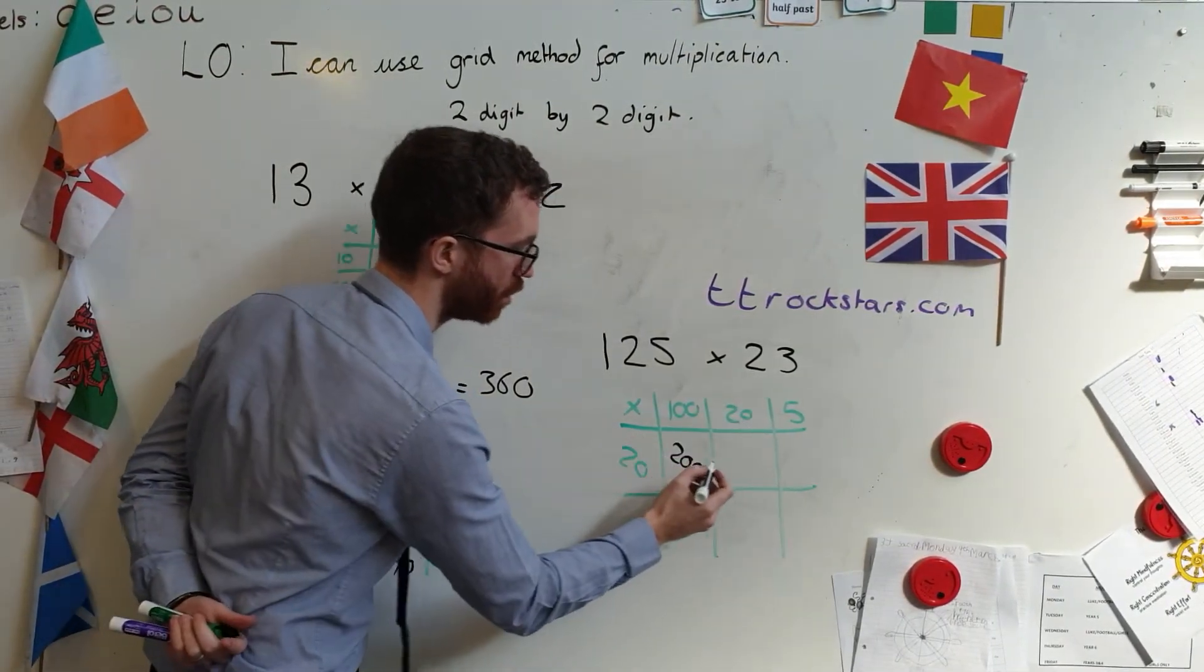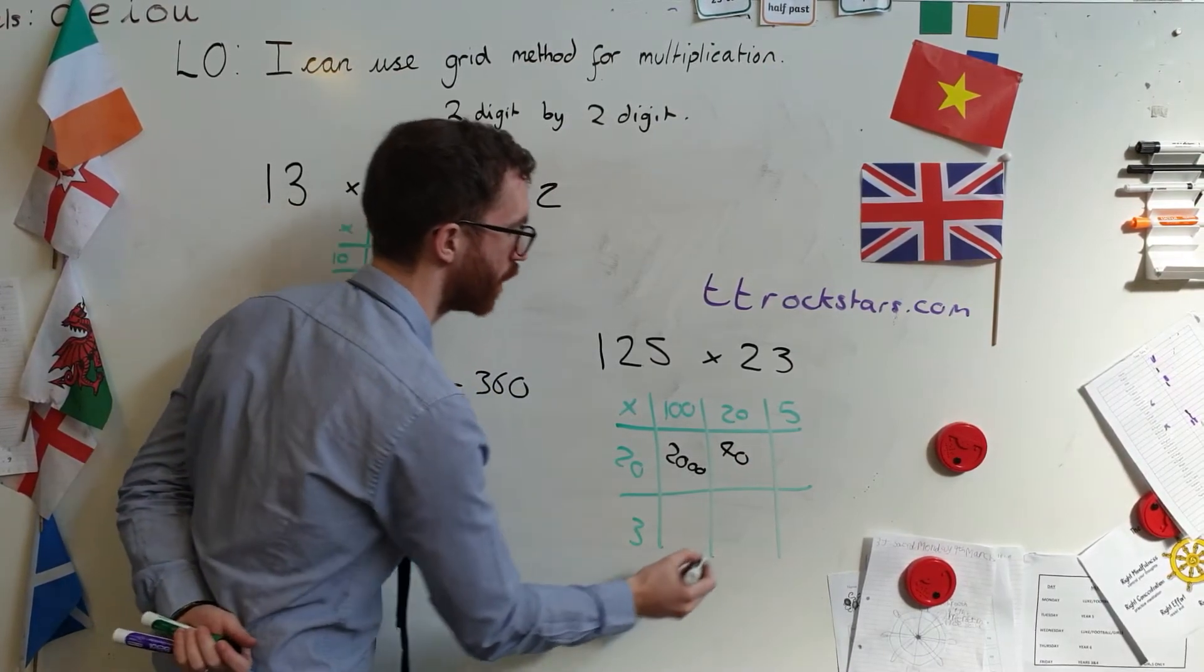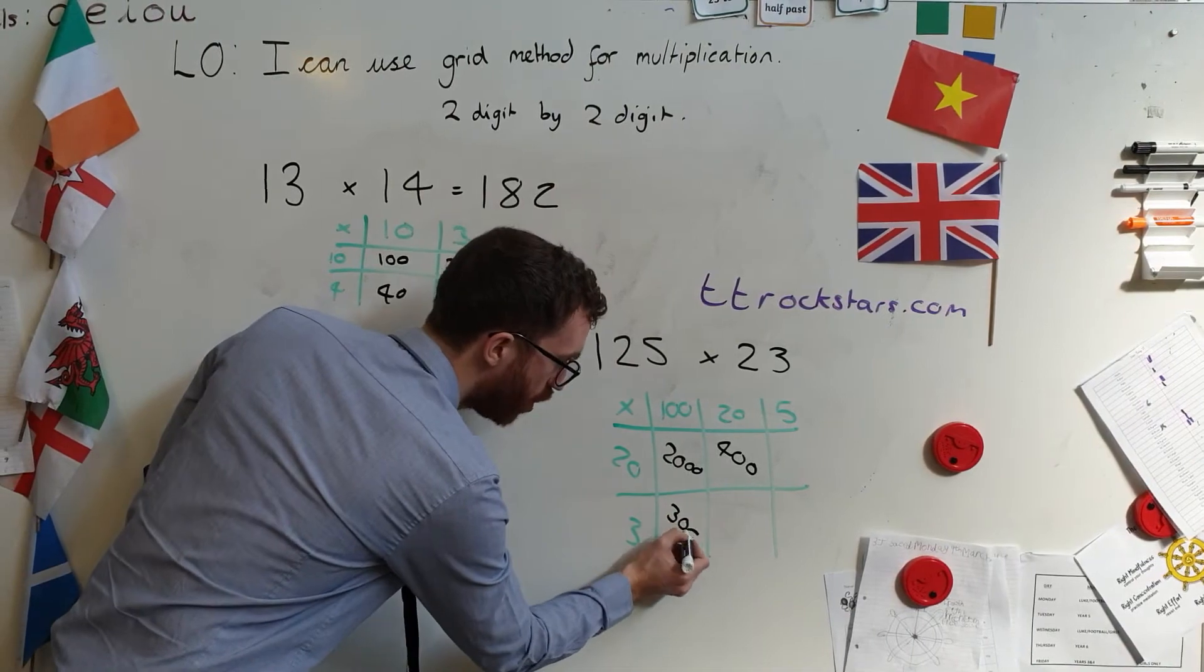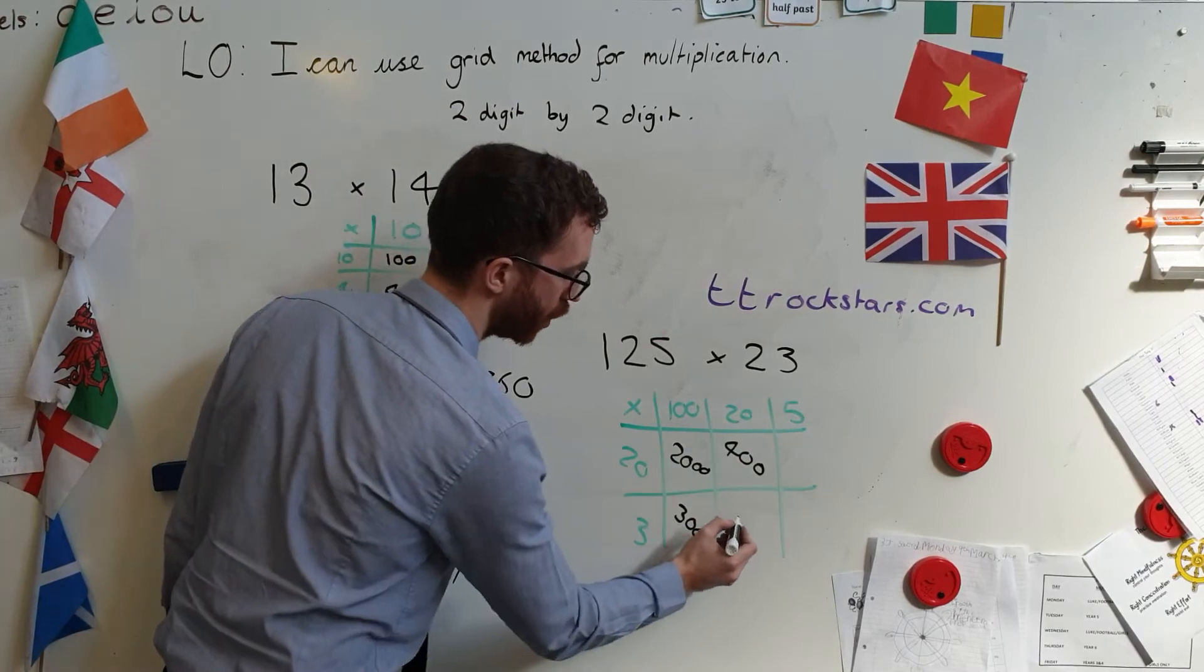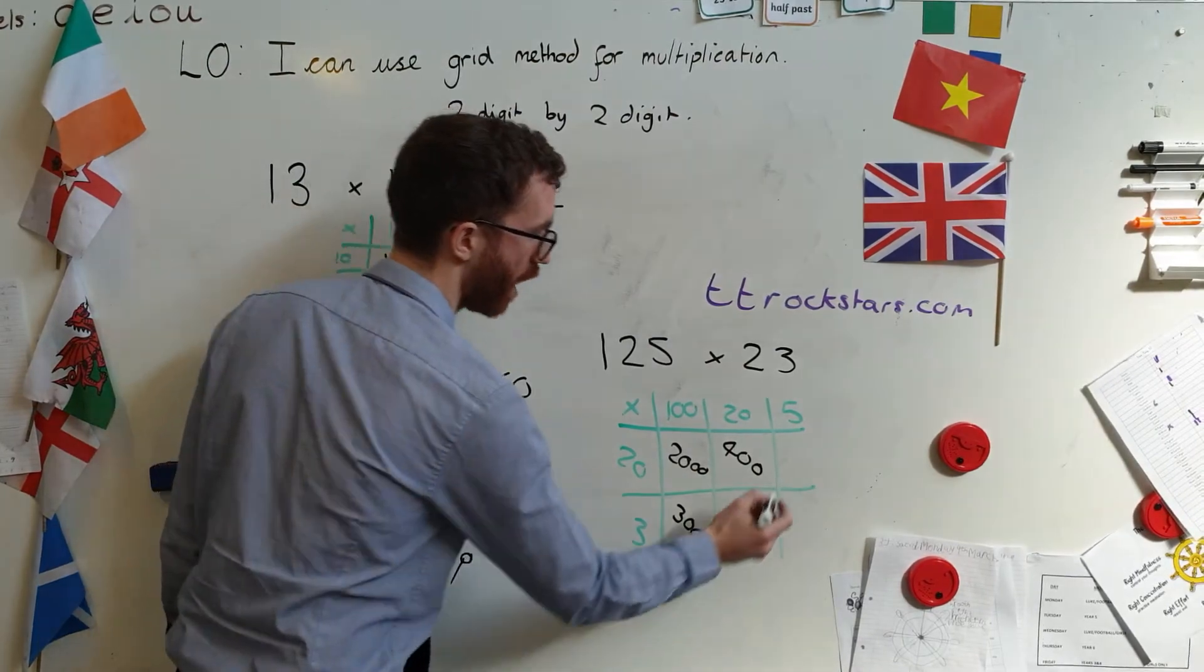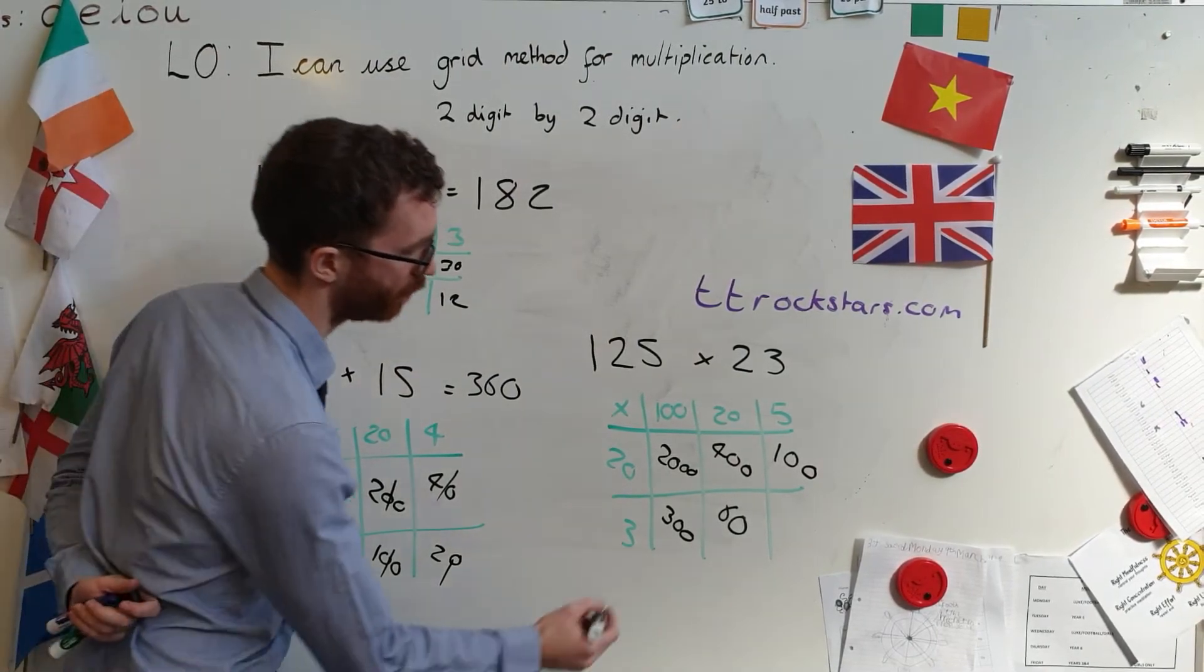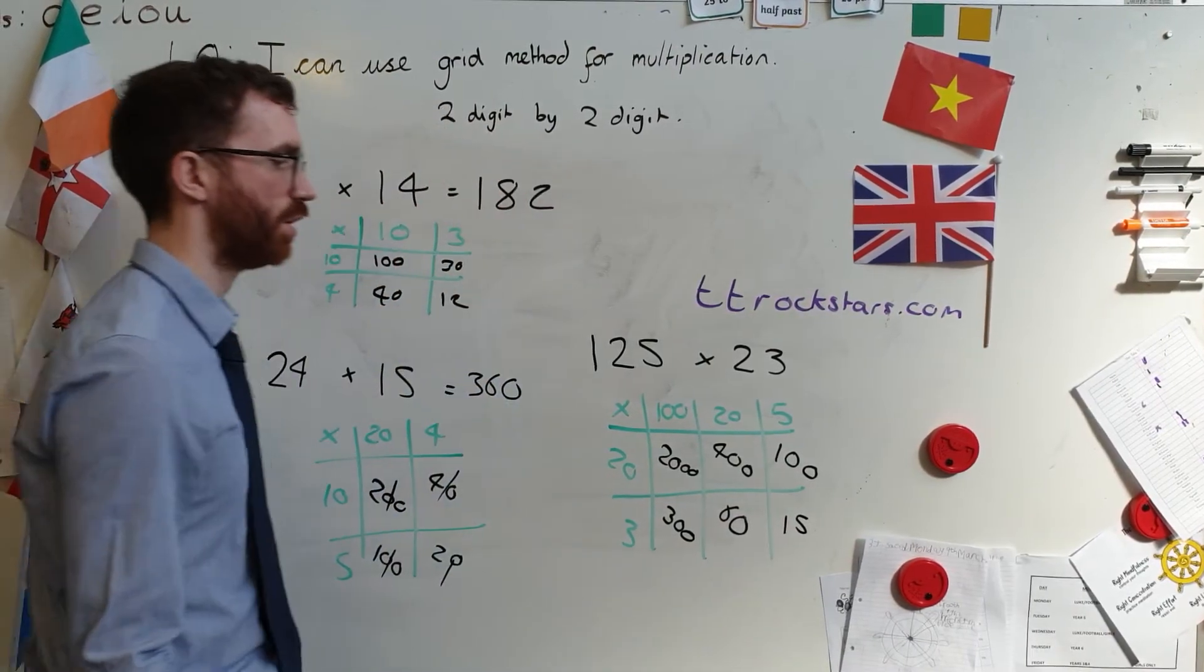All right. 20 times 20. Well, 2 times 2 is 4. 20 times 2 would be 40. 20 times 20 must be... 400! Wow, this is a big number, isn't it? 3 times 100 is... 300! Now, what have we got now? Oh, let's do 3 times 20. Well, 3 times 2 is 6. So, 3 times 20 is 60. 20 times 5. Well, 2 times 5 is 10. So, 20 times 5 must be 100. Now, what have we got is 3 times 5, which is 15. Now, at this point, it would be worthwhile me just checking and making sure everything is right.